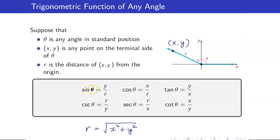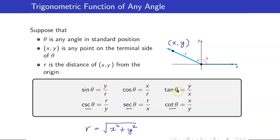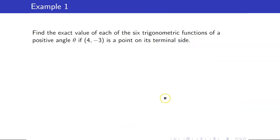We can now define the trigonometric function values of theta: sine theta is y over R, cosine theta is x over R, and tangent theta is y over x. You don't have to remember the remaining three functions because they are just the reciprocals of these three.